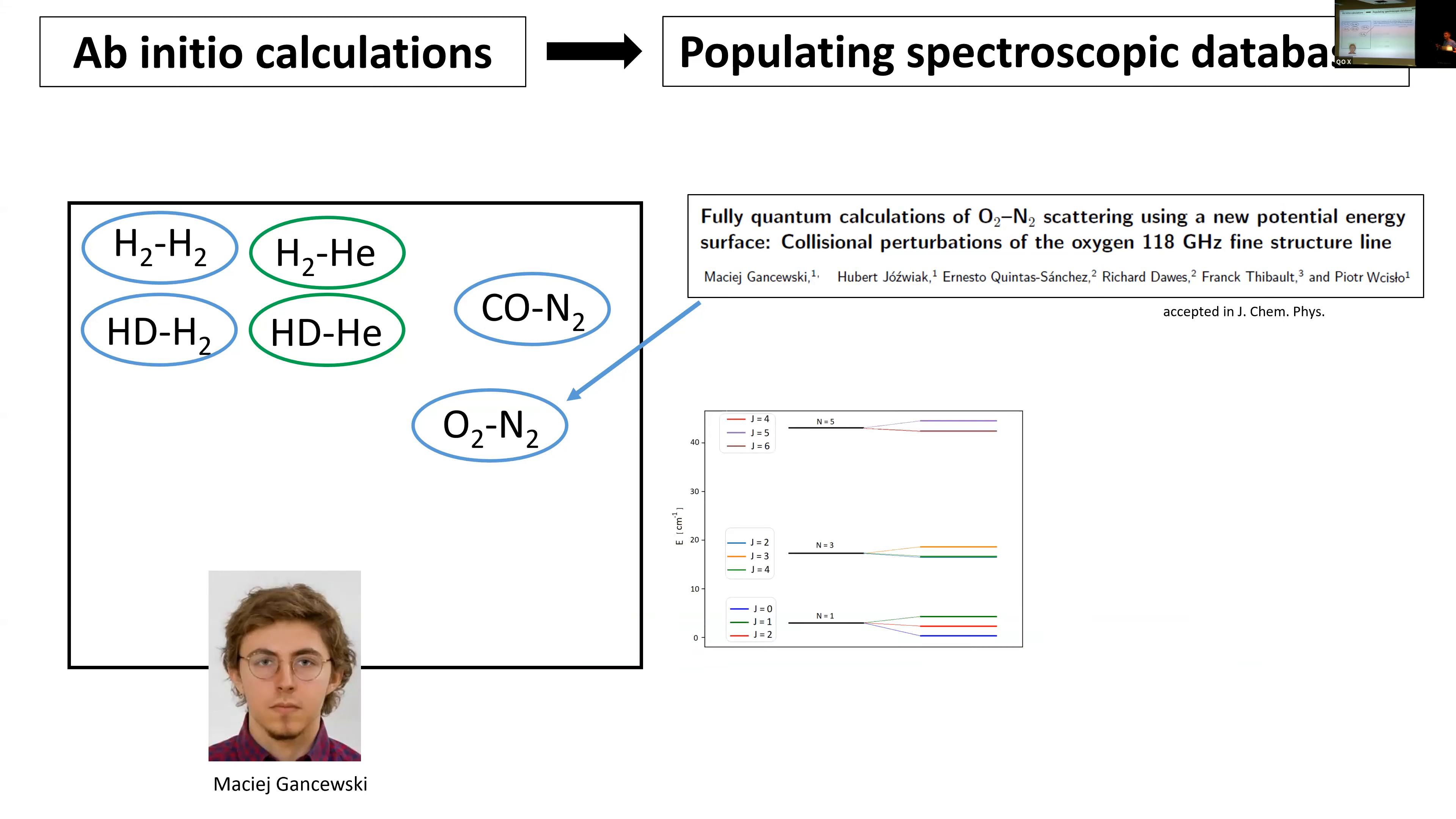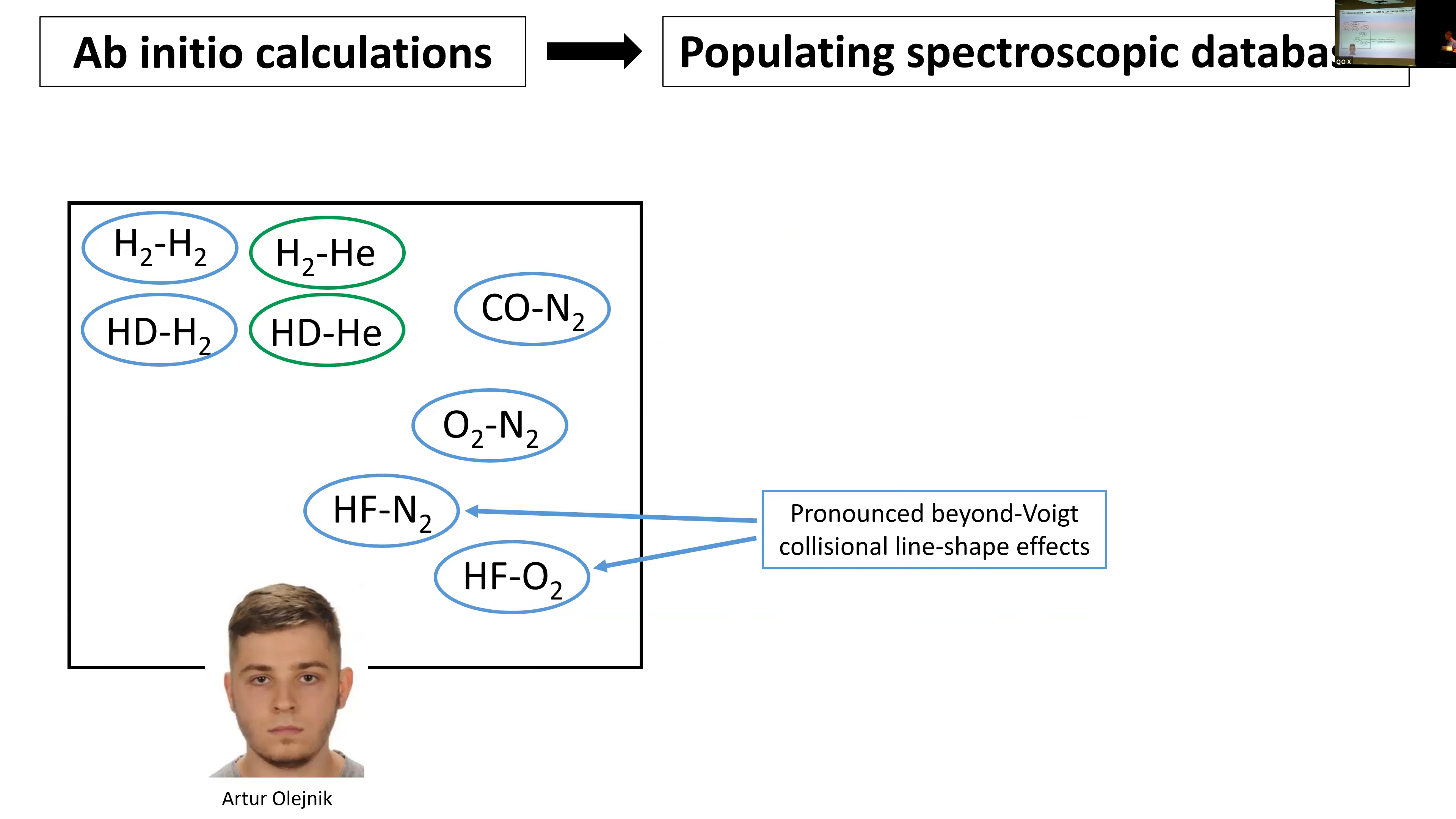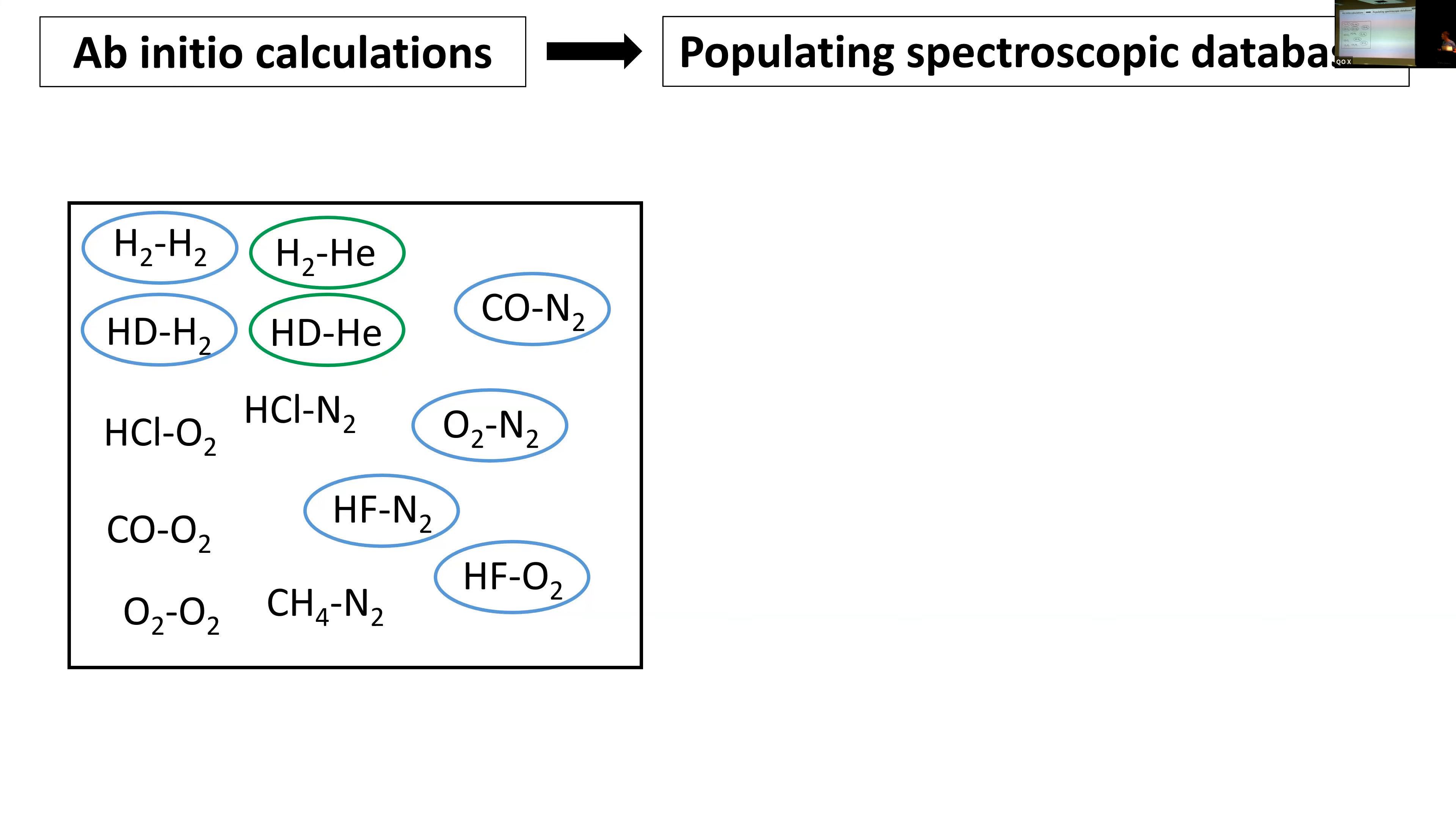Then we do the same for O2-N2. From theory point of view, O2 is interesting because in the ground state it has a non-zero electronic triplet state, interesting from the collisional point of view. Maybe I will go very quickly. We achieved similar good agreement. It was just published in JCP. Now we started working with important pollutants for atmosphere, hydrogen fluoride. We are getting prepared to address other pollutants and other important molecules for the atmosphere.